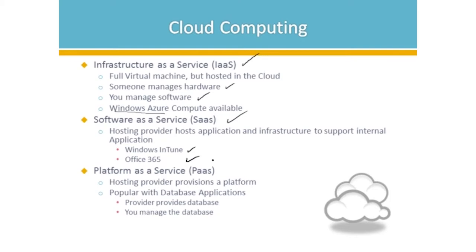A third category of cloud computing is Platform as a Service (PaaS), where the hosting provider provisions the platform used to host all database applications — they provide the database and you manage it. So we have three distinct categories: IaaS, SaaS, and PaaS. These acronyms show how we can host information in the cloud in different ways. The cloud is very handy for high availability and letting someone else take care of the hardware and backups.